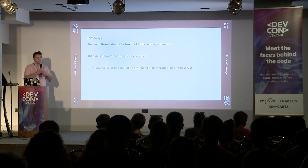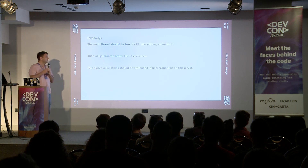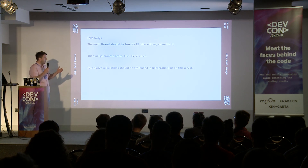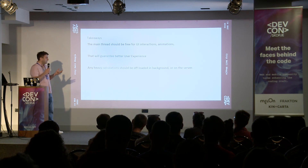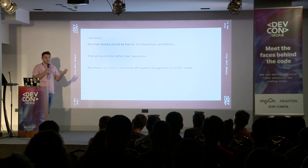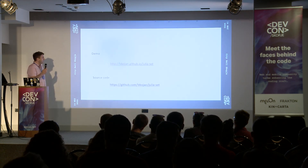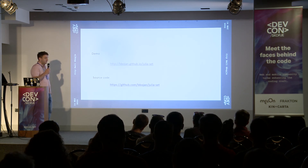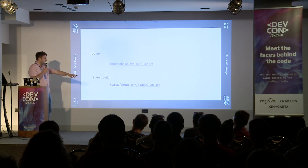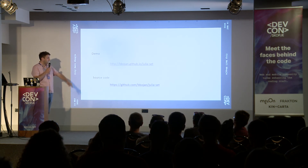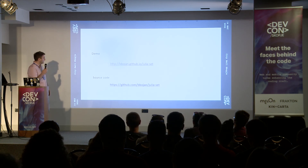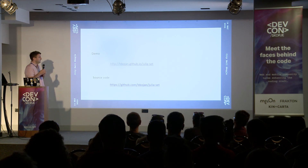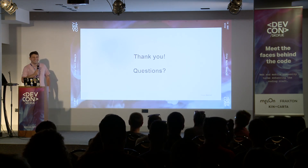The main thread should always be free for user interactions and animations, because the user always wants a better user experience. We should not calculate heavy things on the main thread — we should always offload them to the background, or even better, to the server. You can find the demo at the provided URL or the source code on my GitHub page. That's it — thank you.